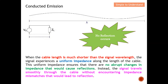The signal travels smoothly through the cables without encountering impedance mismatch that would lead to reflection. In short, when the cable length is much shorter than the signal wavelength, there won't be any reflection. Because of uniform impedance, conducted emission will be the dominant factor. If we do have reflection, then radiated emission becomes the dominant factor — we will study radiated emission on the next slides.